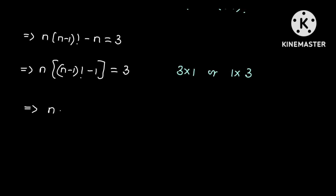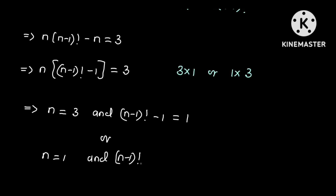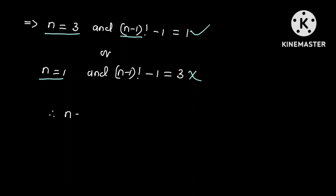This implies either N = 3 and (N-1)! - 1 = 1, or N = 1 and (N-1)! - 1 = 3. If N = 3, then (N-1)! = 2! = 2, and 2 - 1 = 1, so N = 3 satisfies the equation. If N = 1, then (N-1)! = 0! = 1, and 1 - 1 = 0, which is not equal to 3. So N = 1 does not work, and therefore N = 3.